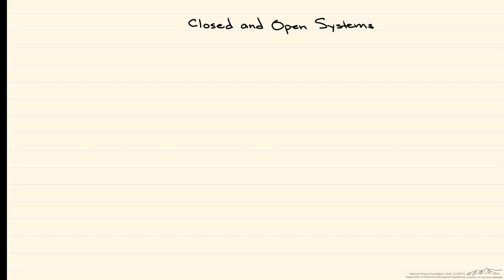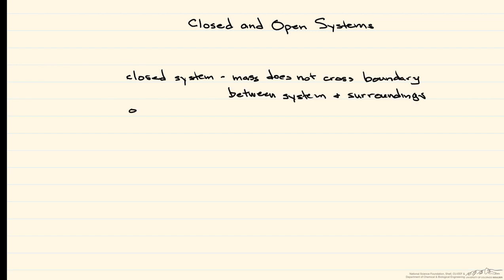In this screencast, we talk about energy balances and the difference between a closed and an open system. For a closed system, no mass crosses the boundary between the system and the surroundings. In an open system, however, mass will cross the boundary. In both of these systems, energy crosses the boundary between the system and the surroundings.